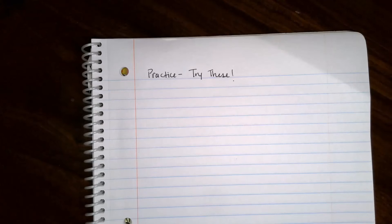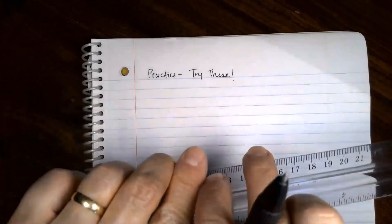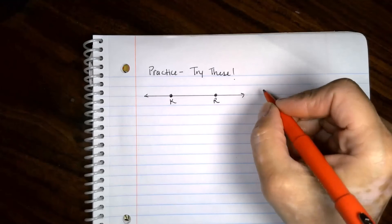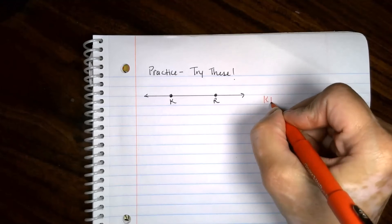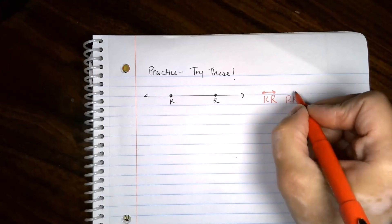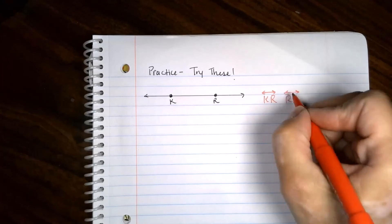All right, let's see if you learned some of this notation. I'm going to draw something. I want you to name it. Go ahead and name that. That's a line. So it could have been K-R with the little line symbol over it, or R-K with the little line symbol over it.